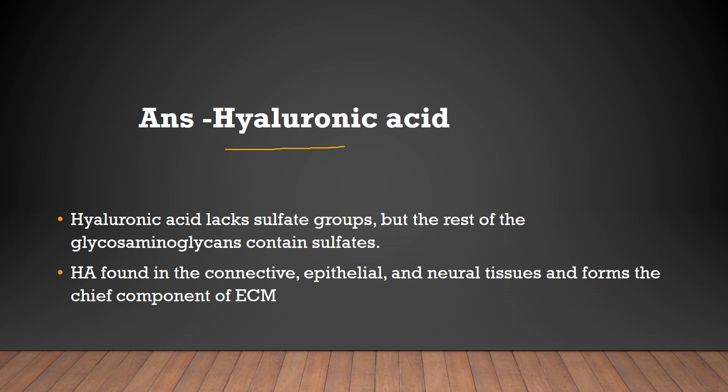Hyaluronic acid lacks a sulfate group, whereas the rest of the glycosaminoglycans contain sulfates. Hyaluronic acid is found in epithelial tissue, connective tissue, and neural tissue, and it forms the chief component of the extracellular matrix.